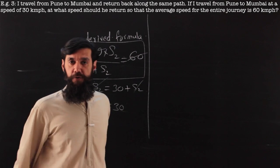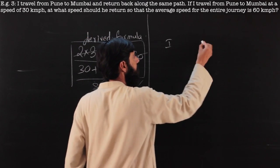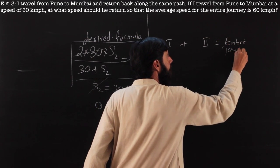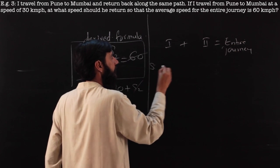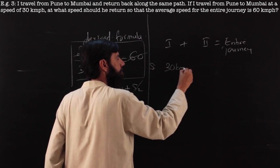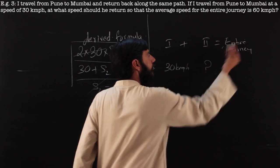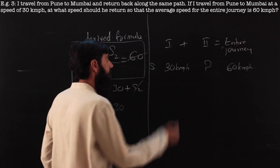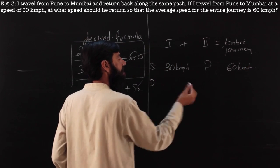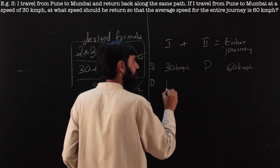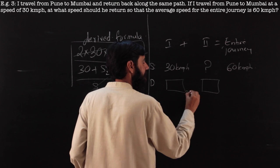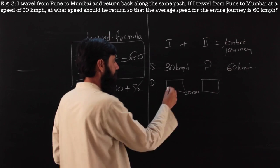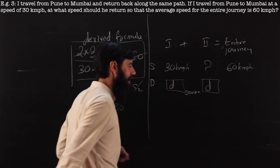If I put that down, the first stretch, the second stretch, first plus second is the entire journey. The speeds are 30 kilometers per hour, I do not know, and the entire journey the speed should be 60 kilometers per hour. What is important is the distances are same, whatever I am going to go ahead.